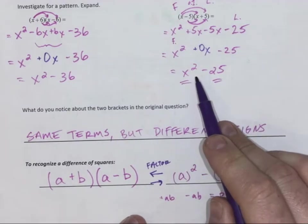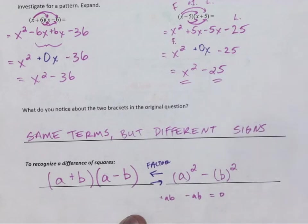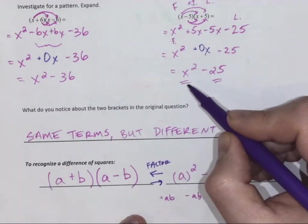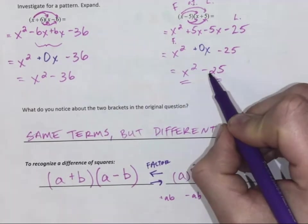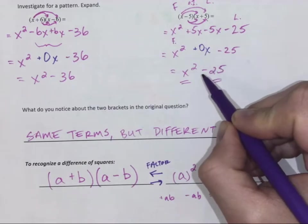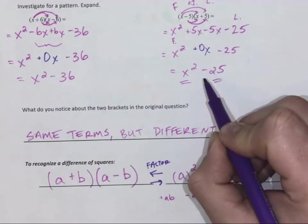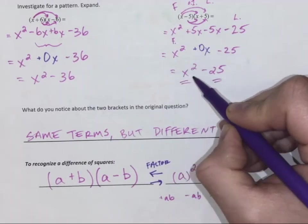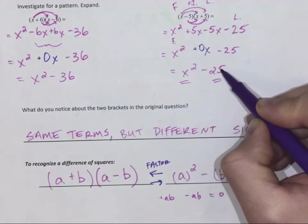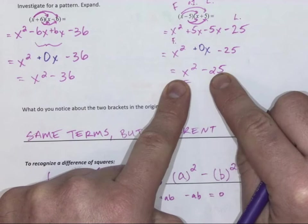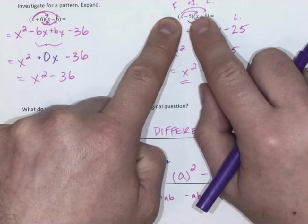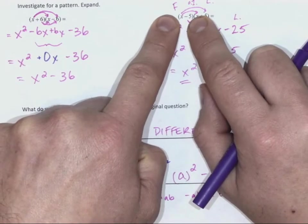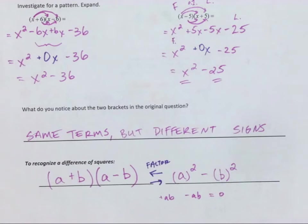So if we ever saw x squared minus 25, what we're looking for is first step: is there a common factor that we can pull out? If there isn't, our next step is, is the middle sign or the second term a negative? It is. Can we take the square root of the first term? Can we take the square root of the second term? If we can, then it satisfies our needs. The square root of x squared is x, square root of 25 is 5, so they go into brackets, one with a negative, one with a positive. So let's see some examples and see if we can put this together.